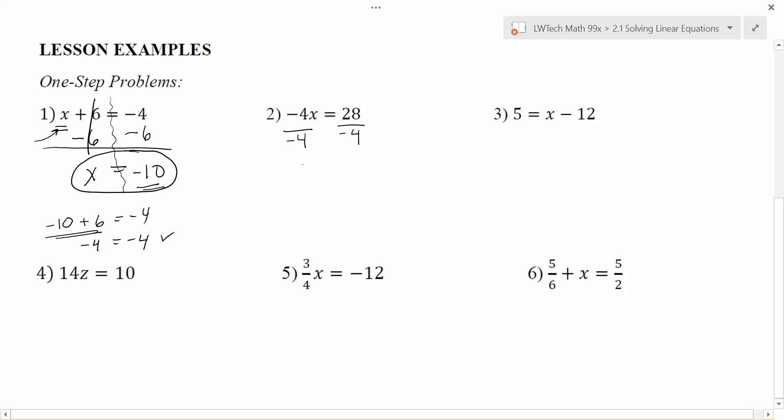So here, when I divide by -4, -4 divided by -4 gives me a positive 1x, which is exactly what I want. On this side, 28 divided by -4 gives me -7, and that would be my solution. And again, you can plug it back in to check. -4 times -7 is positive 28. So everything looks good.